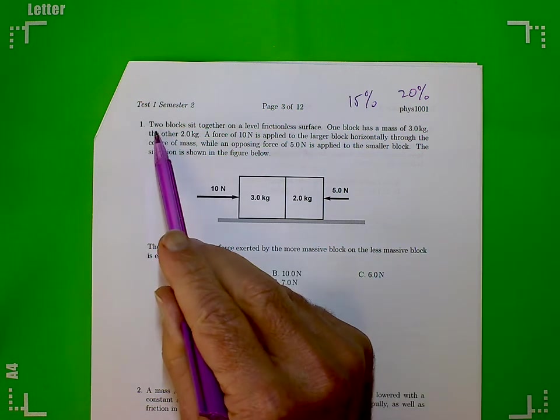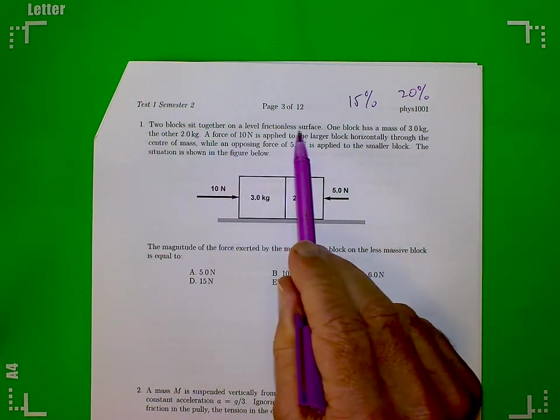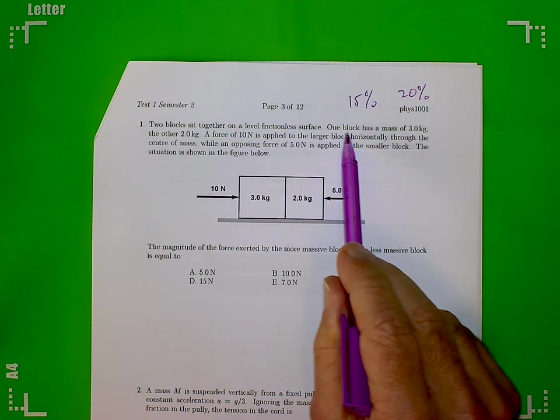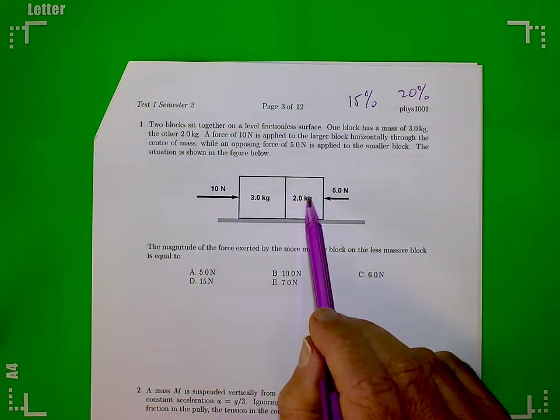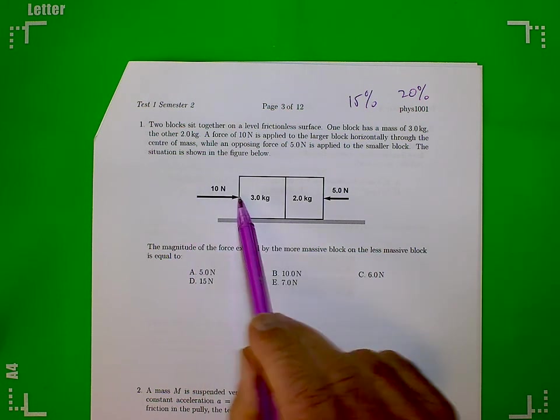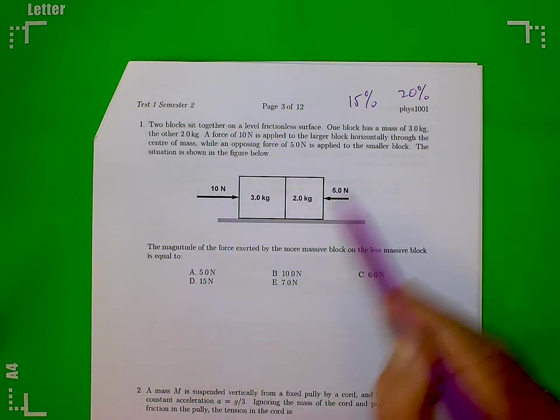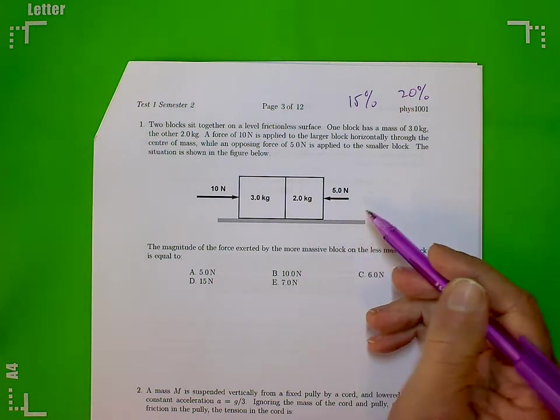Okay, so let's read. Two blocks, there they are, sit together on a level frictionless surface. One block has a mass of 3 kilograms and the other 2 kilograms. A force of 10 newtons is applied to the larger block horizontally through its center of mass, while an opposing force of 5 newtons is applied to the smaller block.